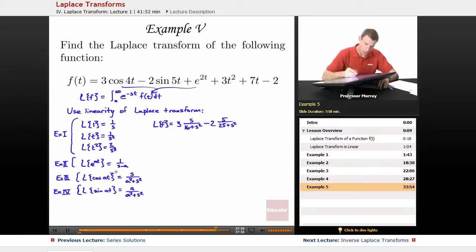Plus e to the 2t. Now, I can read that one right here. That's plus 1 over s minus 2.